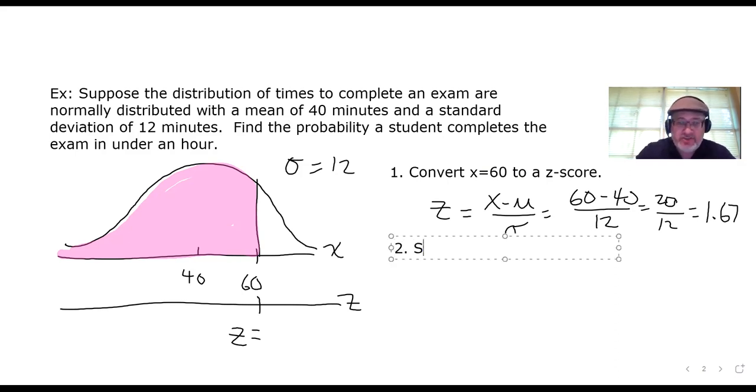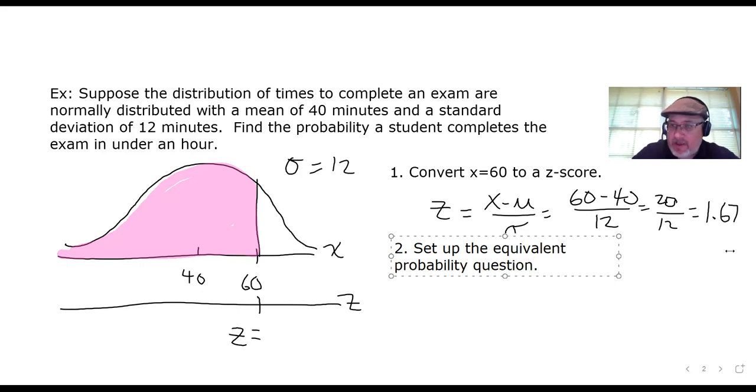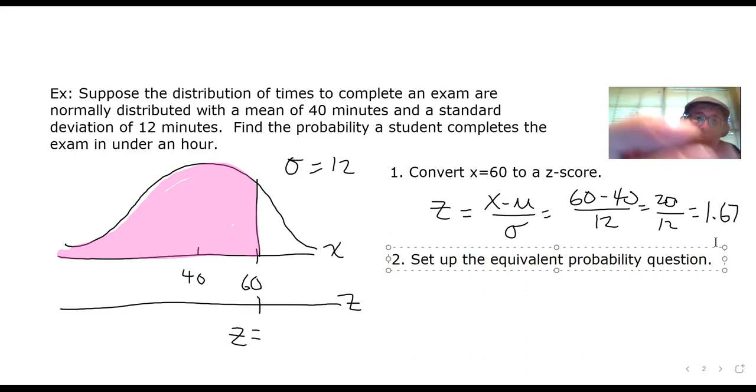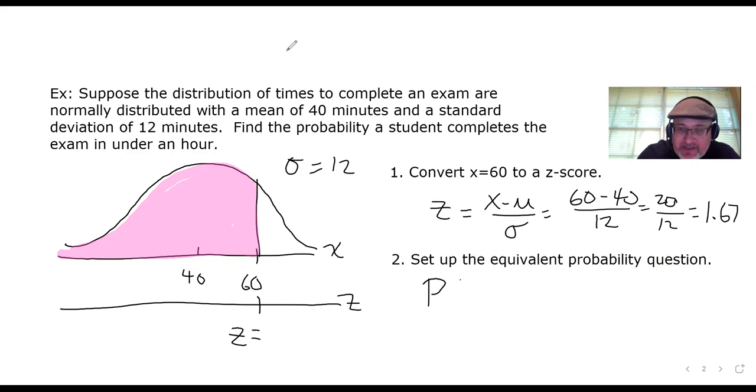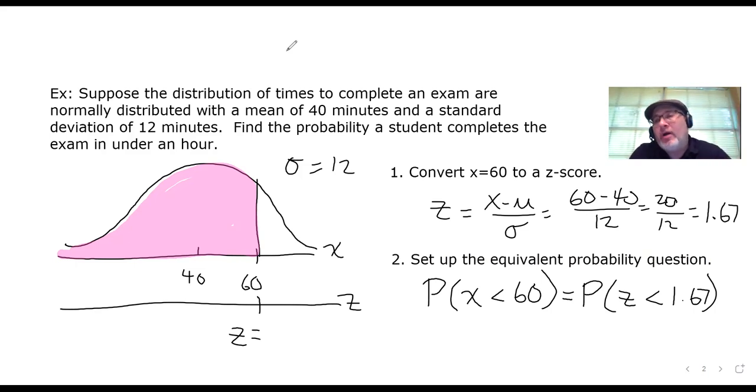Our second move is to set up the equivalent probability question. What is it we're being asked to find? In terms of probability, we're trying to find the probability that the time it takes to complete the exam, which is X, is under or less than 60. But the nice thing about the Z score is that the answer to this question is going to be the same thing as the probability that Z is less than the equivalent Z score that we just calculated. So we're converting it to a problem that can be answered using our Z chart. Remember, in the Z chart, areas under the curve correspond to probabilities of Z being certain values. Now that we've converted it from a non-standard question to a standard question by converting to Z, we can use the Z chart.